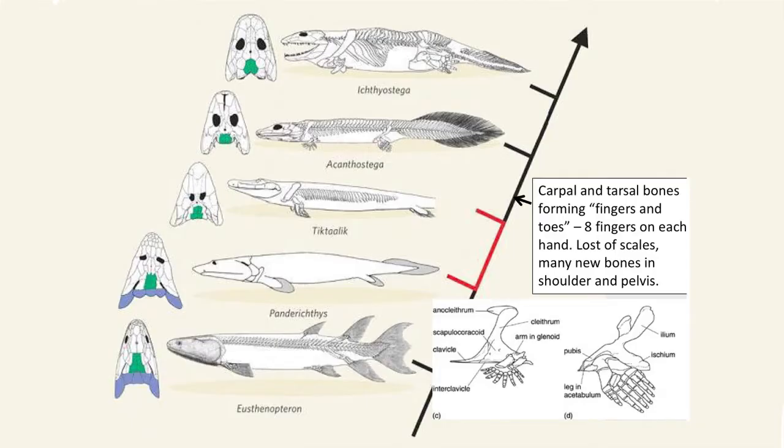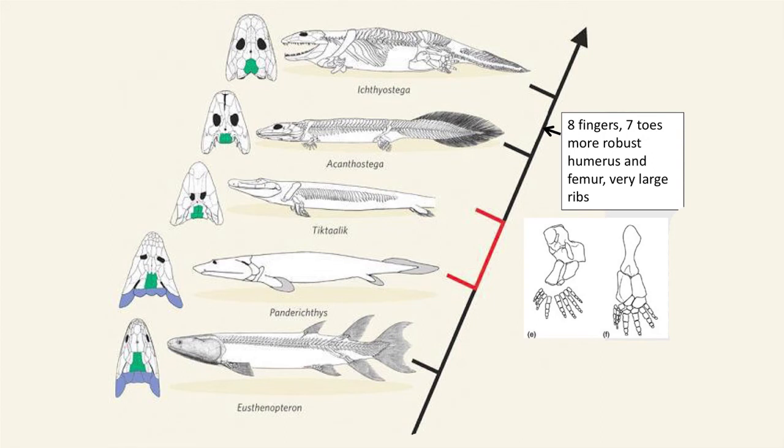The next character to evolve was carpal and tarsal bones forming fingers and toes — eight fingers on each hand in Acanthostega, loss of the scales, and many new bones in the shoulder and in the pelvis. Then in Ichthyostega we see eight fingers and seven toes, a more robust and elongated humerus and femur, larger ribs, and a reduced tail.